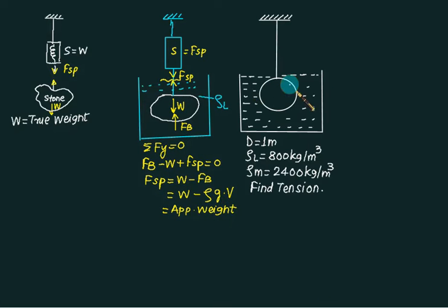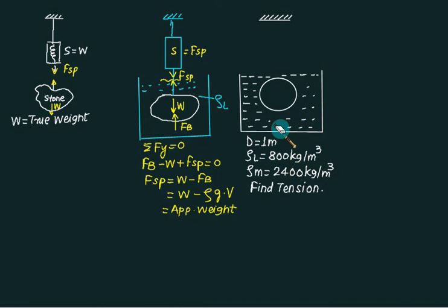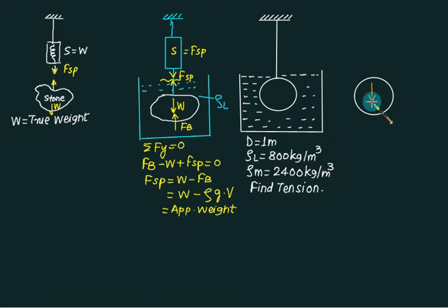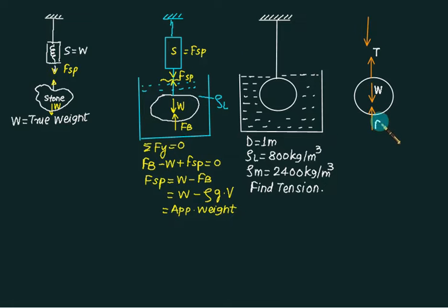Consider a spherical object of diameter 1 m, liquid density 800 kg/m³, and material density 2400 kg/m³. Since the material is denser than the liquid, it will try to sink downward. To stop the downward motion, a cable is attached. We cut the section and develop the FBD: the weight of the sphere acts downward, the buoyant force acts upward, and the cable tension acts as an inward (upward) force.